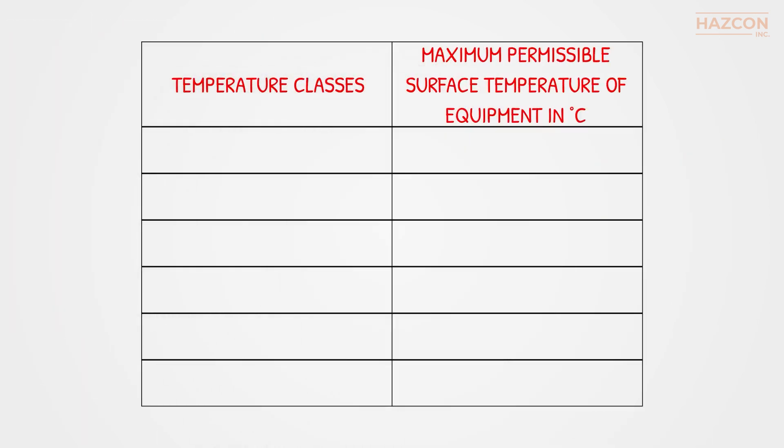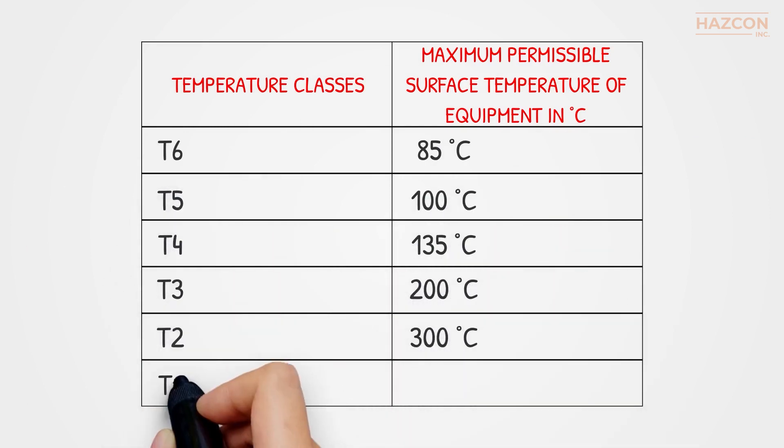There are six main temperature classes named as T6, T5, T4, T3, T2, and T1.